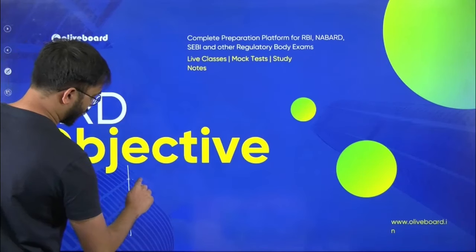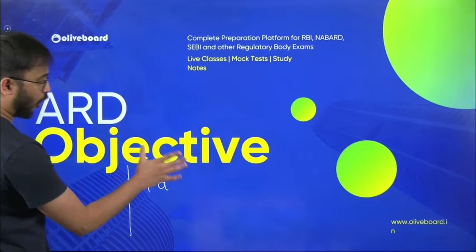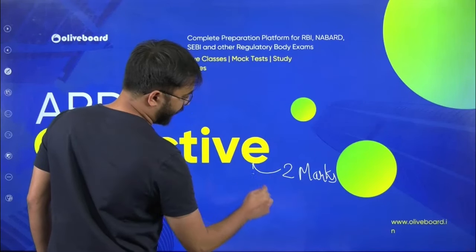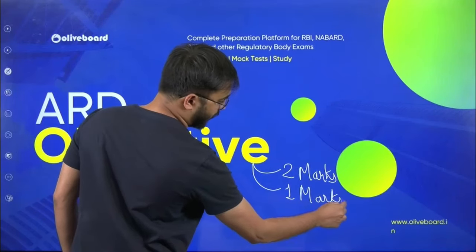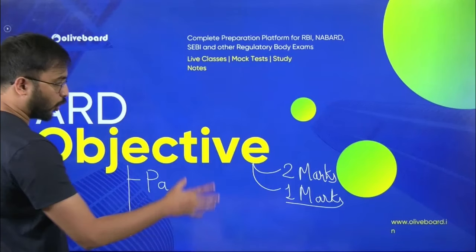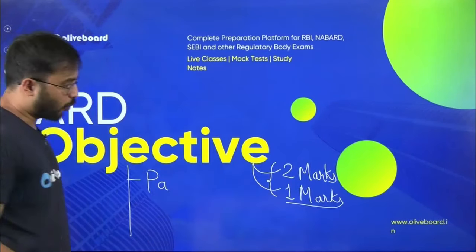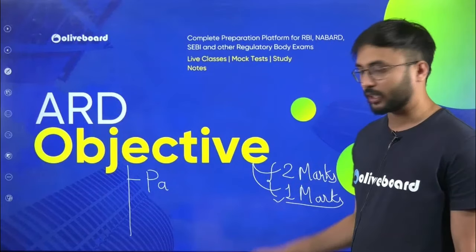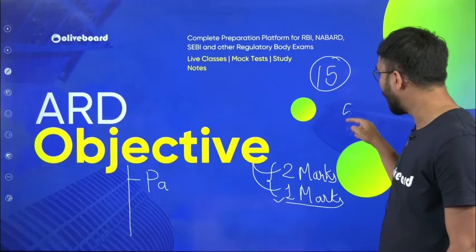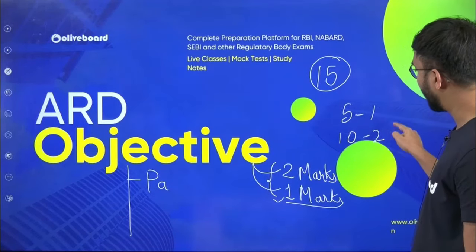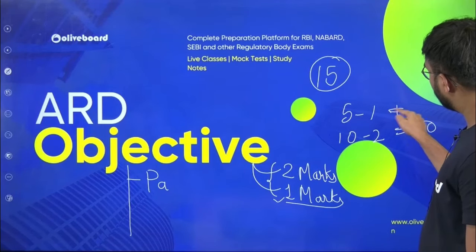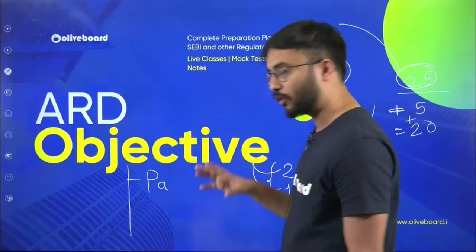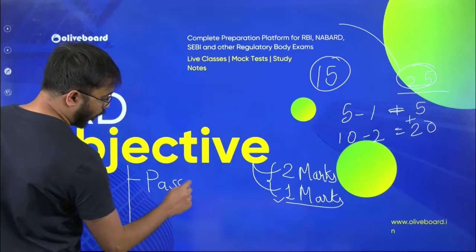The ARD objective questions are either for two marks or one mark. One-marker questions will have less difficulty and shorter length. Out of the total 15 questions in ARD objective, 5 are for one mark and 10 are for two marks — giving a total of 25 marks from ARD and 25 from ESI, totaling 50 marks.